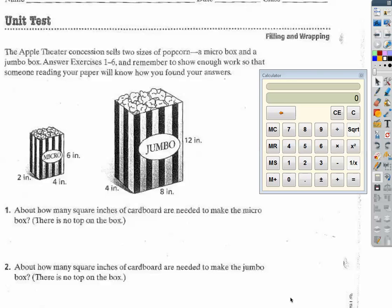The Apple Theater Concessions sells two sizes of popcorn, a micro box and a jumbo box. About how many square inches of cardboard are needed to make the micro box? There is no top to the box of popcorn.